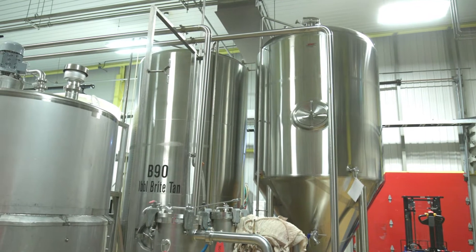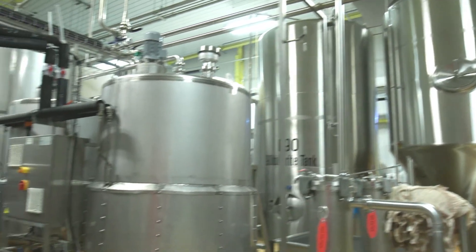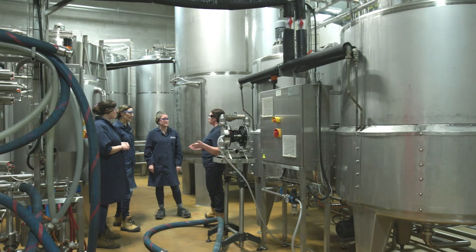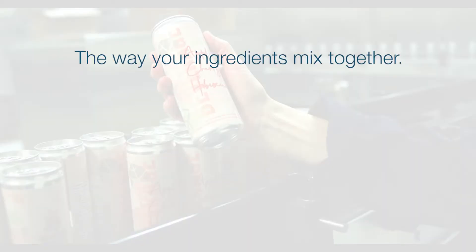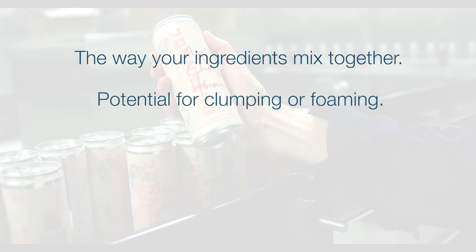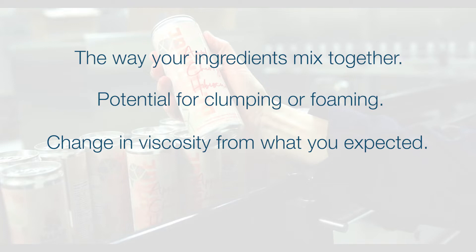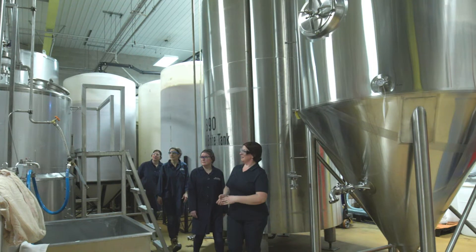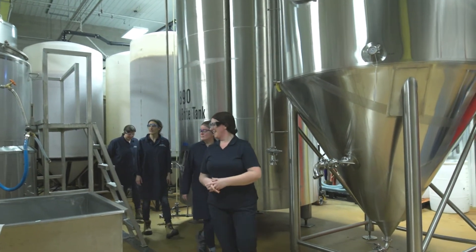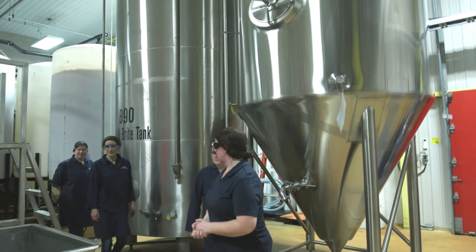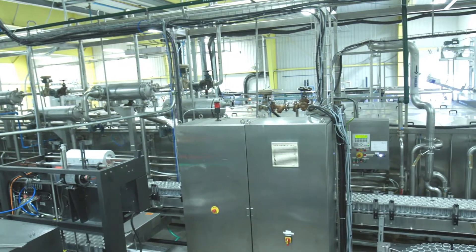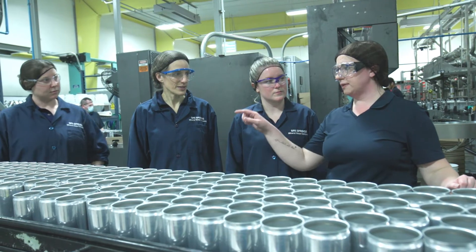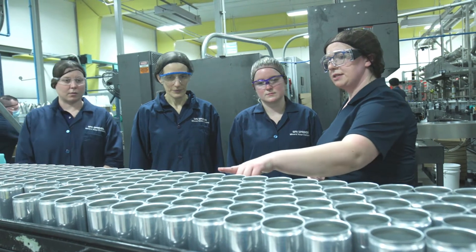Mixing or blending your product at a larger scale can often create surprises. Proper mixing is critical for your product. You may see differences in the way your ingredients mix together, potential for clumping or foaming, change in viscosity from what you expected, and time and temperatures required for mixing. At a larger scale in your facility or at your co-packer's, liquids going into your product will be transferred through pipes. If there are any ingredients that are not well-mixed or particulates that are falling out of suspension, this can be a problem.